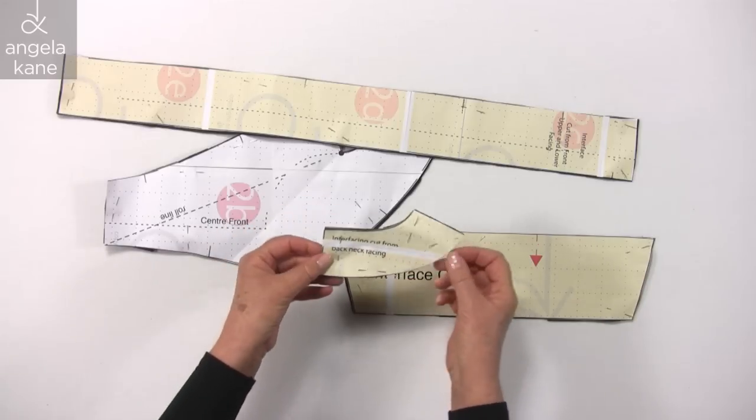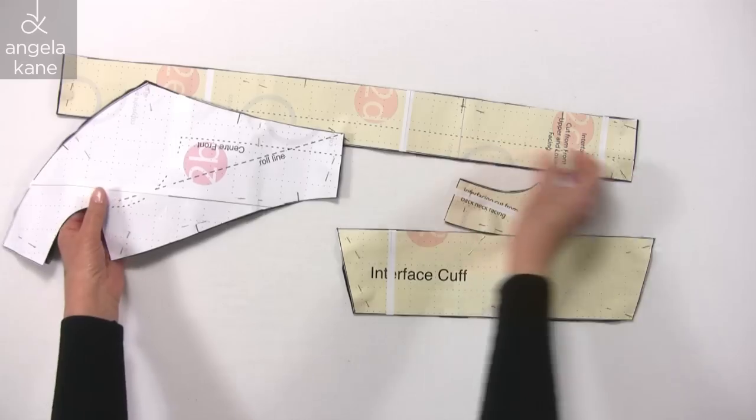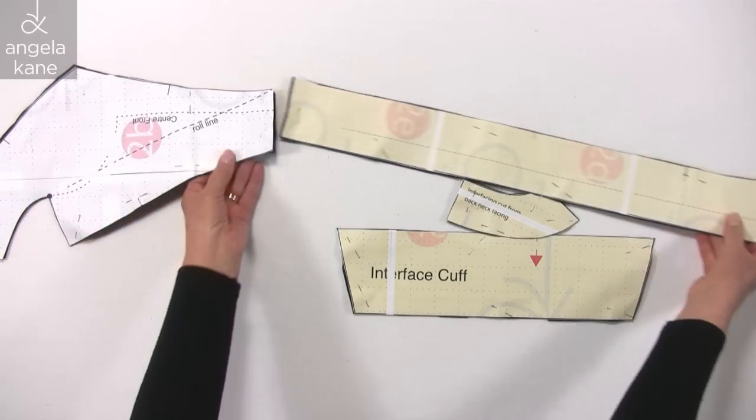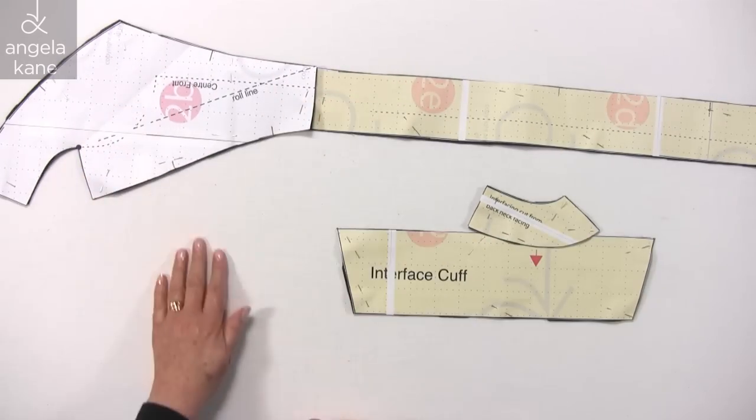You will notice that the interfacing is cut without the seam allowance. The next step is to reinforce the corners and stay stitching.